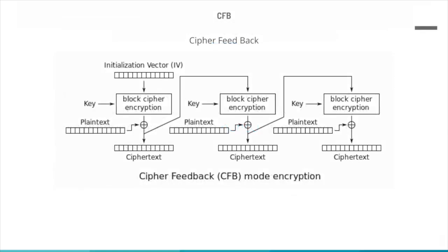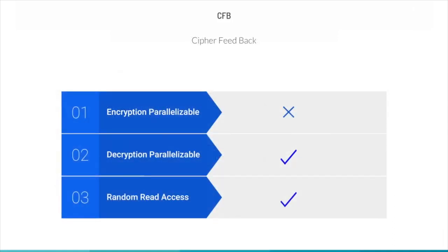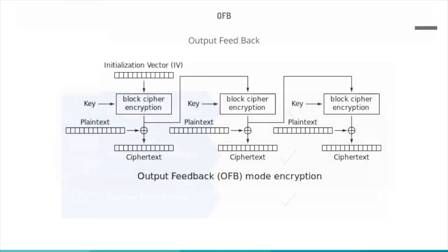The use of IV is to prevent repetition in data encryption, leaving no traces or patterns in ciphertext. The Cipher Feedback (CFB) and Output Feedback (OFB) modes allow the block cipher to be converted into a stream cipher, eliminating the need to pad a message to an integral number of blocks. These can also operate in real time. Similar to CBC, the decryption in CFB is parallelizable, unlike the encryption process, and it also allows random read access.